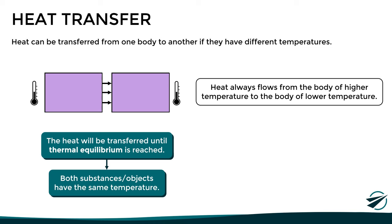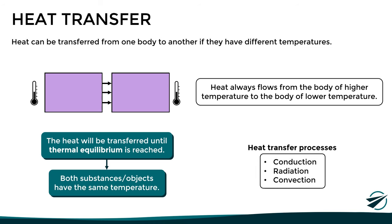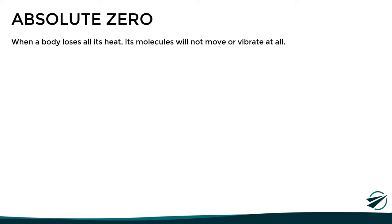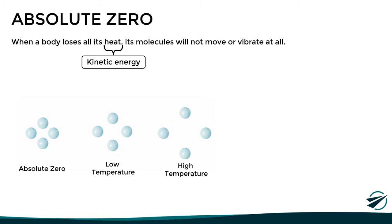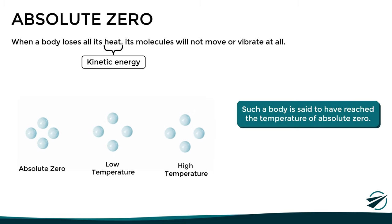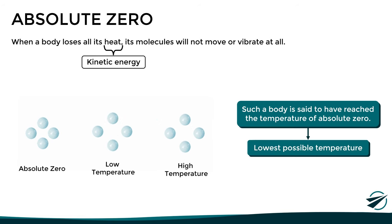This heat transfer can occur by means of different processes — specifically, conduction, radiation, and convection — but we will talk about them in more detail in a future video. Now, you might be wondering: what happens if a body loses all its heat? In that case, its molecules will not move or vibrate at all, since they will have lost all of their kinetic energy. In this situation, we say that the body has reached absolute zero, which by definition is the lowest possible temperature.